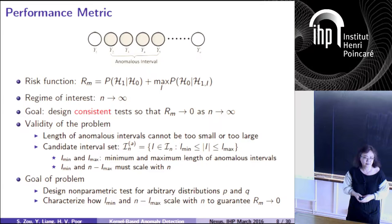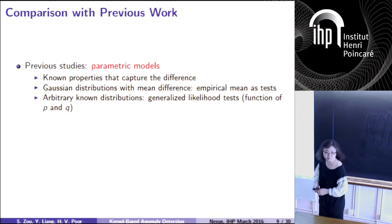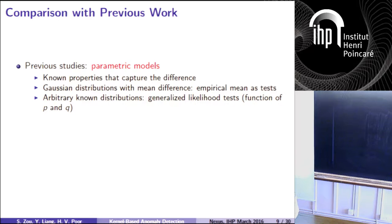Consistency is required for each given pair of P and Q. The interval length L is between i-min and i-max, and is not known in advance. We treat this as an assumption, and later characterize i-min and i-max as conditions. The case where L falls outside these bounds is not considered, since we cannot guarantee the risk function converges to zero in those regimes.